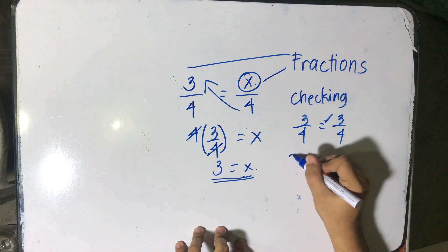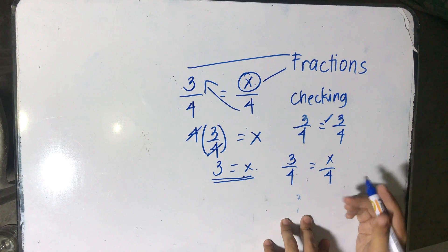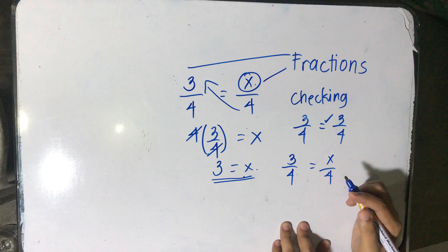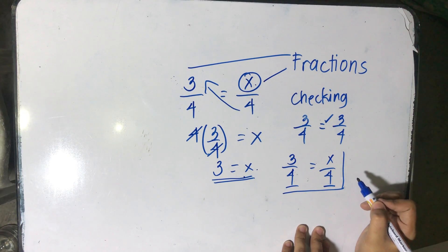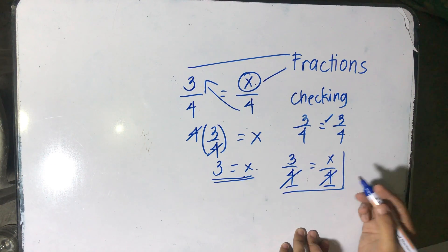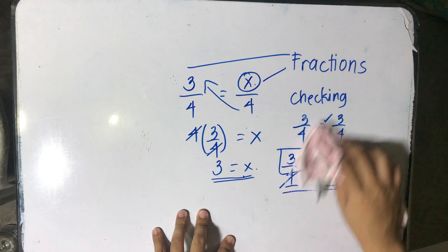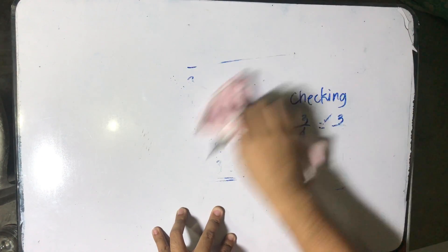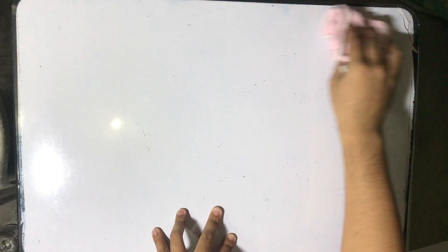Another way: given 3 over 4 is equal to x over 4, since the denominators are the same, you can simply cancel them out — cancel 4 on both sides — and x is equal to 3. Now, there are many ways to solve a rational equation: we can use cross multiplication, we can use LCD, or we can use factorization.